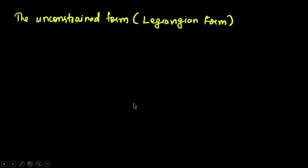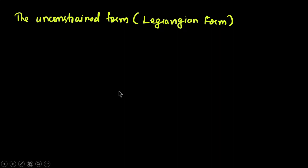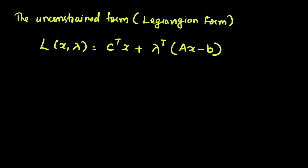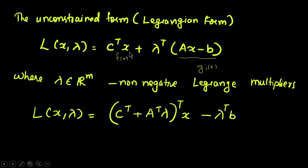The constrained form can be converted into unconstrained form using the Lagrangian: L(x, λ) = c^T x + λ^T (Ax − b), where the first term is f(x) and the second is g_i. Lambda belongs to R^M as non-negative Lagrangian multipliers. When we rearrange the x terms we get: L(x, λ) = (c^T + A^T λ)^T x − λ^T b.